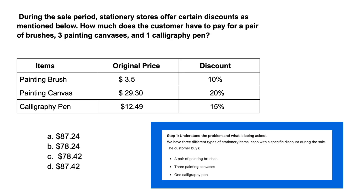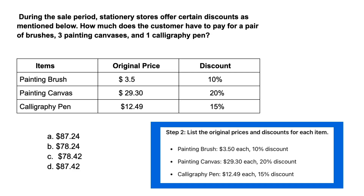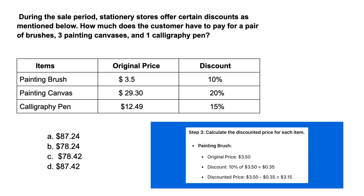To solve this we first understand the problem: three different types of stationary items each with a specific discount. The customer buys a pair of painting brushes, three painting canvases, and one calligraphy pen. Listing original prices and discounts: painting brush $3.50 with 10% discount; painting canvas $29.30 each with 20% discount; calligraphy pen $12.49 each with 15% discount.